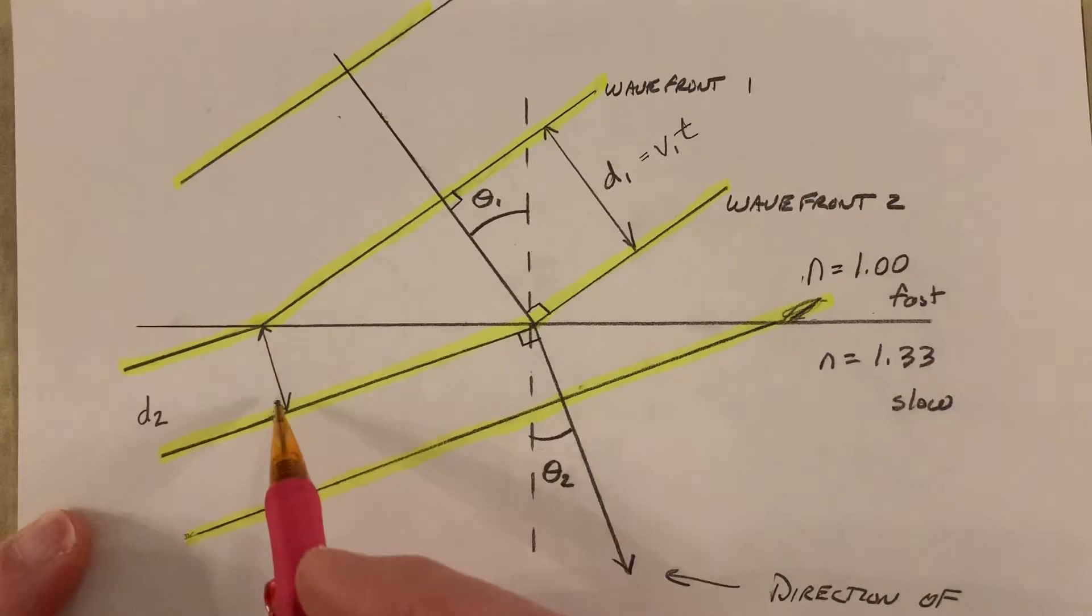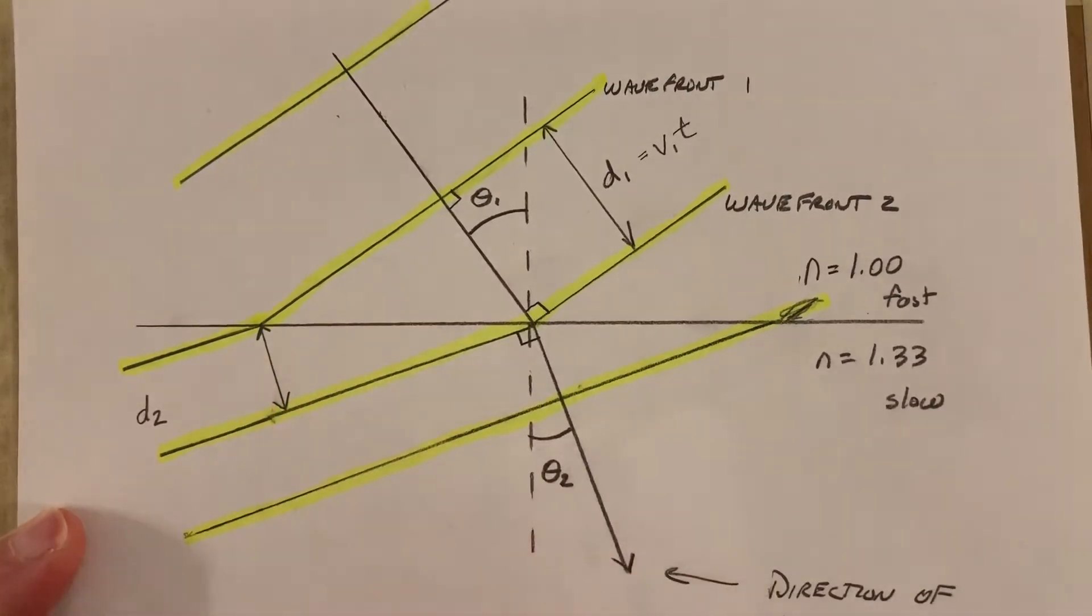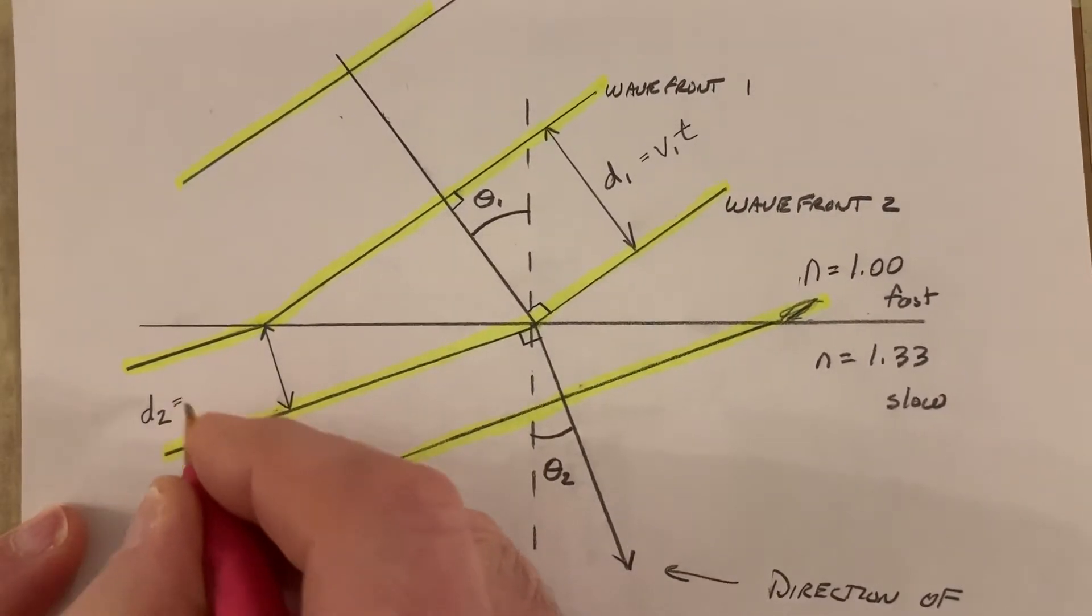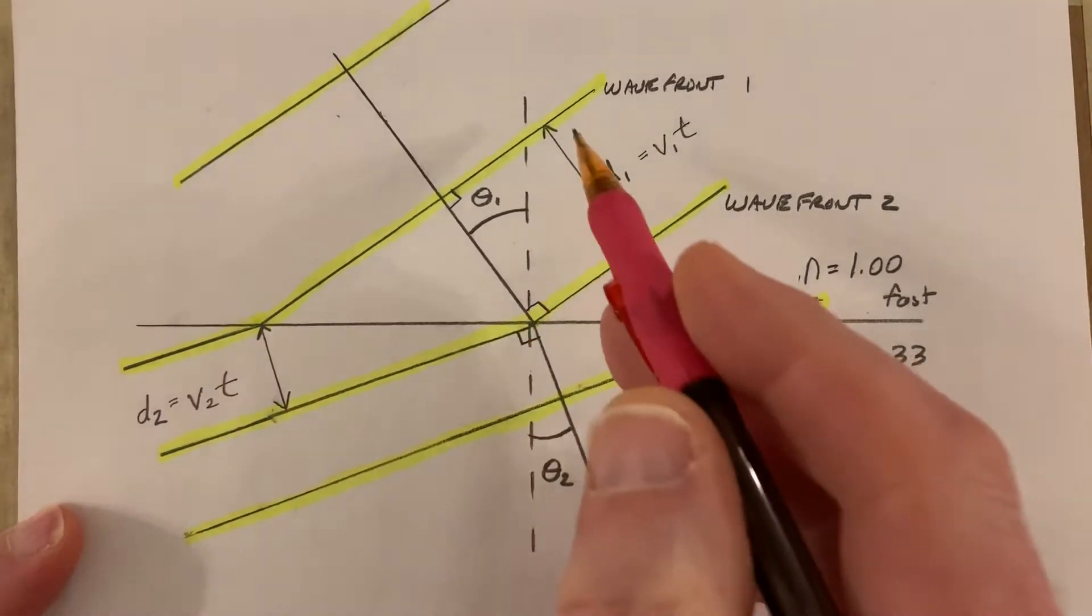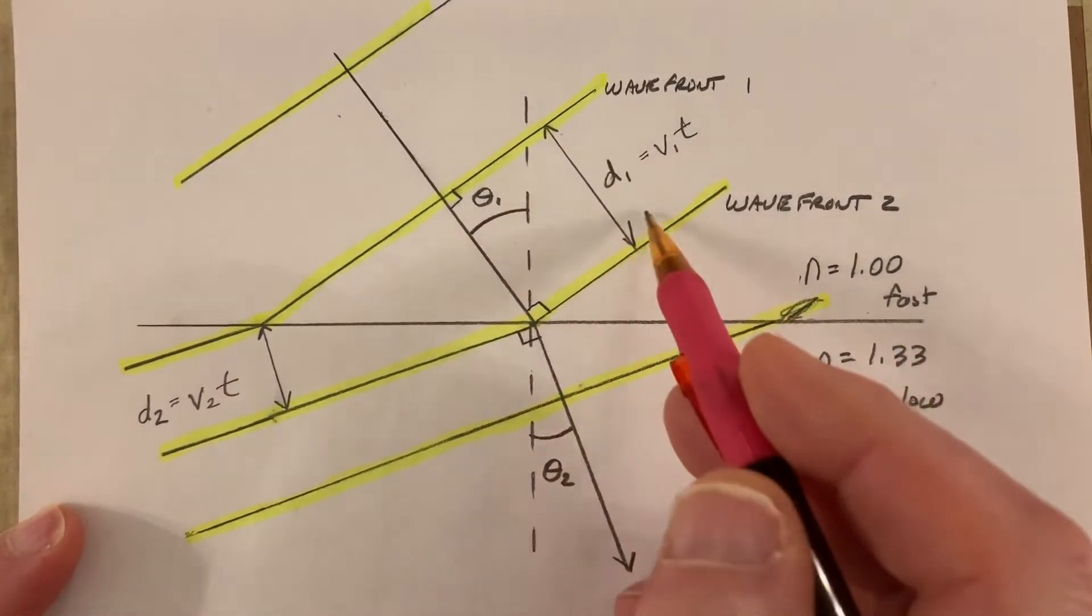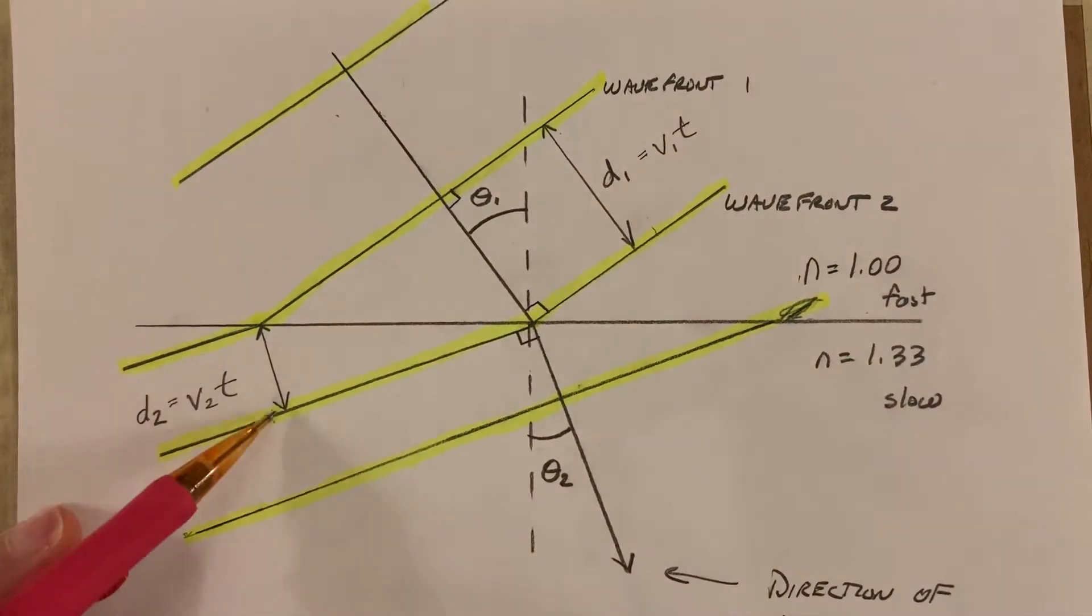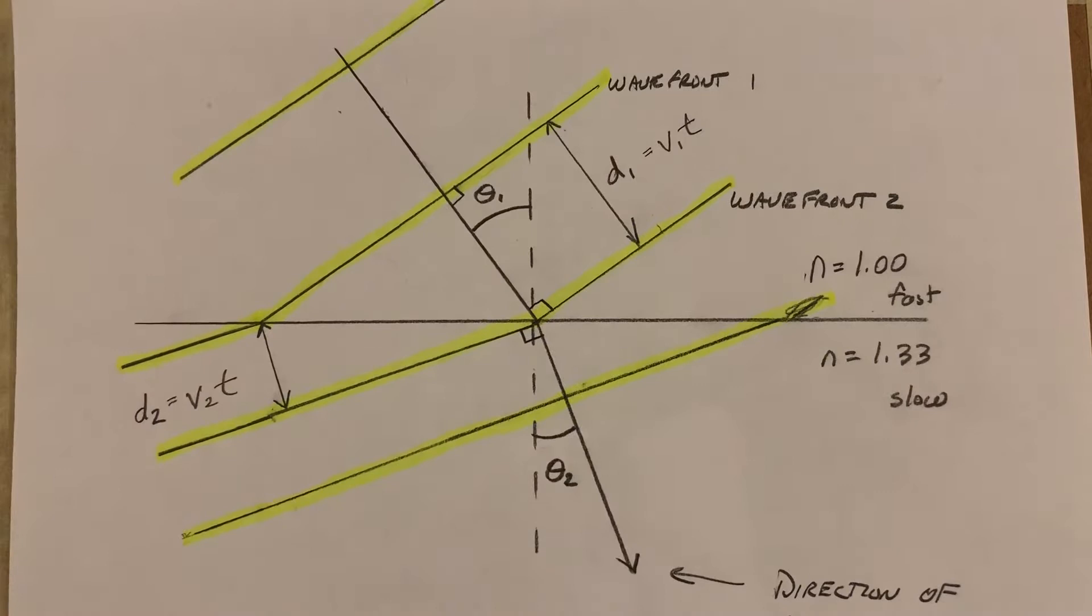Now, over here, this would be the distance of that new wavelength. It would be velocity 2 times time. And it would be in the same amount of time to move from here to here as it does to move from here to here. They're both part of the same waves in the same amount of time. So let's think about this for a second. We're going to have to play around with our angles a little bit.